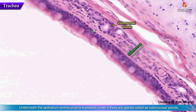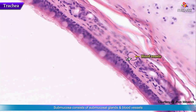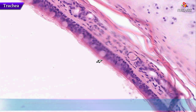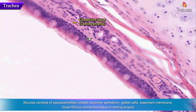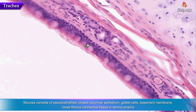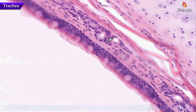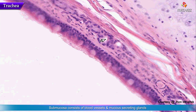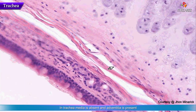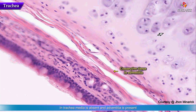These are called submucosal glands because at this level we have submucosa. We also have rich blood vessels in the submucosa as well. So we have our pseudostratified ciliated columnar epithelium with goblet cells, our basement membrane, a small amount of loose fibrous connective tissue in the lamina propria, and then we immediately get into the submucosa which has a lot of blood vessels and mucus-secreting glands. And then we have connective tissue in the adventitia.